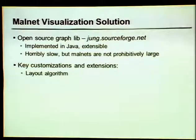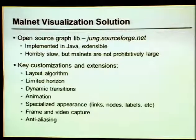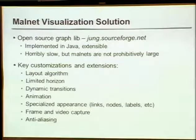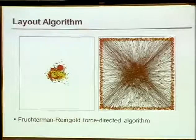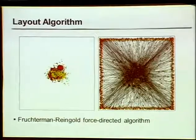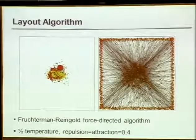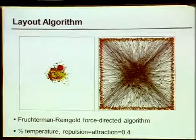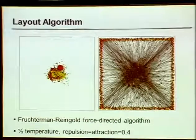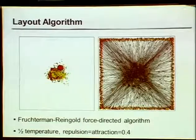The key customizations and extensions we did are large in number. The layout algorithm — making sure everything is placed in a way that makes sense and is logical — we used the FR force-directed algorithm. Essentially it's like connecting all the nodes in the graph with springs that either push or pull, then letting it go and seeing how things end up balancing out. That involves a temperature, which means it slowly cools to the point where it freezes and nothing can move anymore. We also reduced the repulsion and attraction factors because we're talking about relatively large graphs, to make sure we don't end up with everything collapsing black hole-like or everything pushing out to the edges.